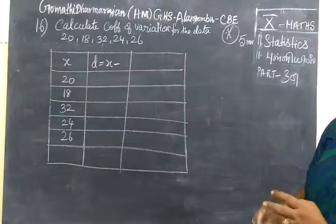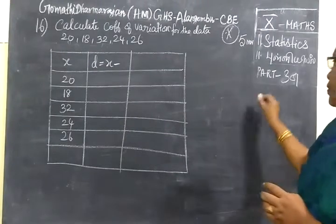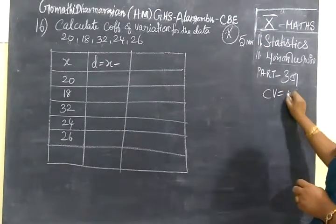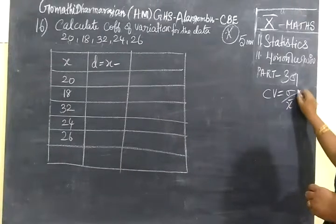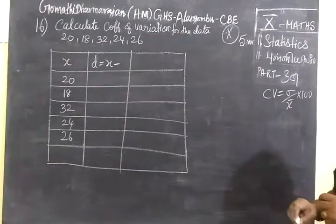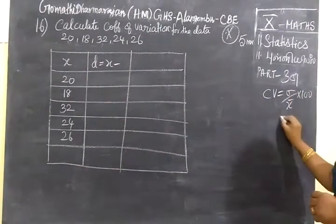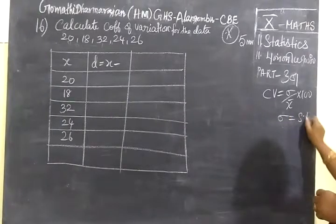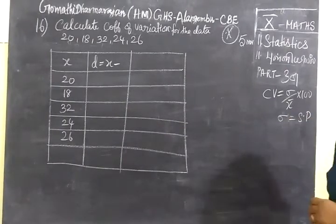Find the coefficient of variation. Coefficient of variation formula is CV equals to sigma by x bar into 100. Sigma means standard deviation, so you can also find standard deviation.